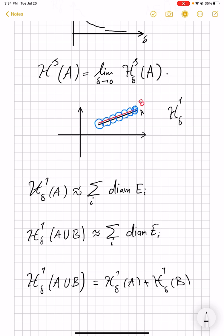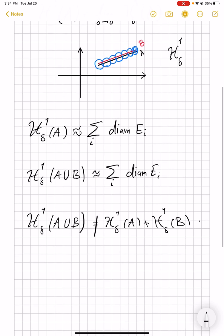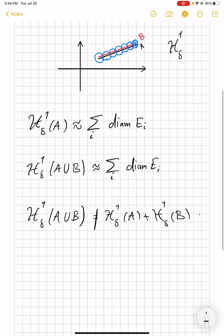while H^1_δ of B, which is equal to H^1_δ of A, is an extra term on the other hand. And therefore, this equality absolutely fails. And that illustrates the point that we cannot expect H^s_δ's to be measures. But does that mean that they are useless? Well, the answer is no.